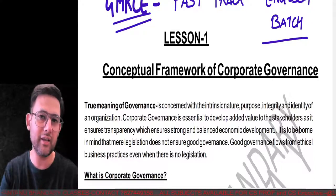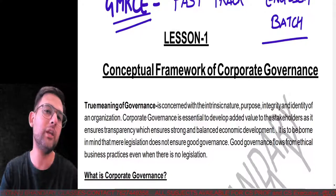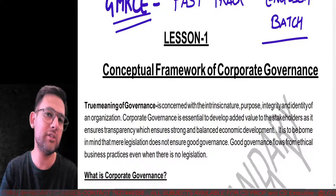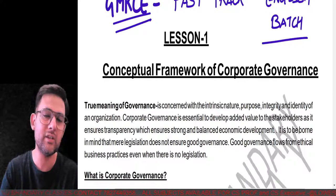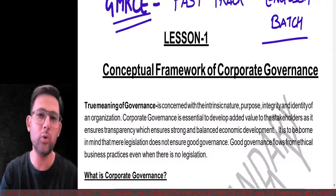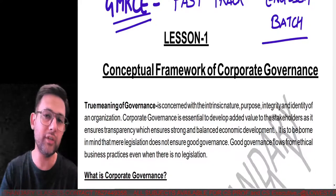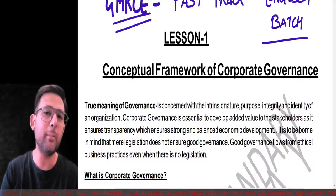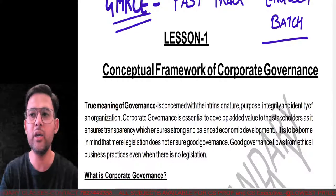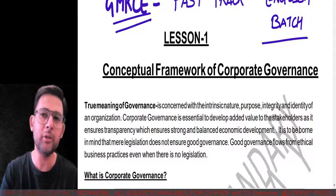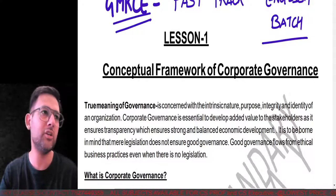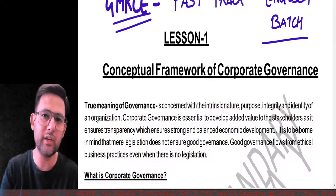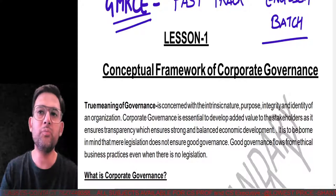In layman's language, since we haven't studied from the notes yet, corporate governance is nothing but an ethical, legalized, and formal way where everything is balanced — from the interest of employees to shareholders, to board diversity, to transparency — done in a balanced way so that the overall growth of the company can be achieved effectively, following all applicable rules and regulations. This is the simplest definition, one I've just framed now.